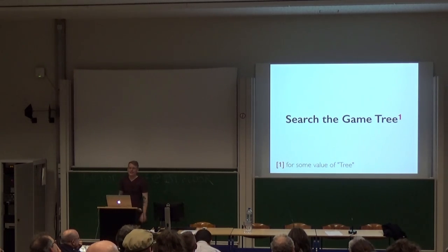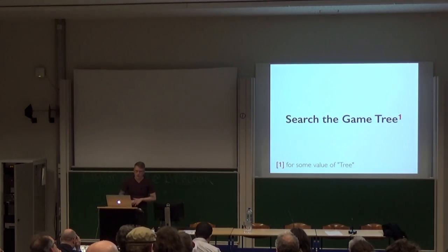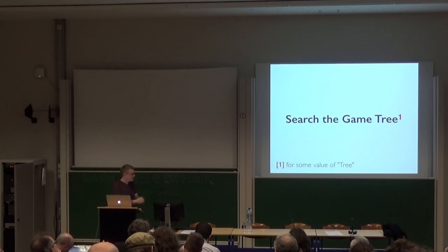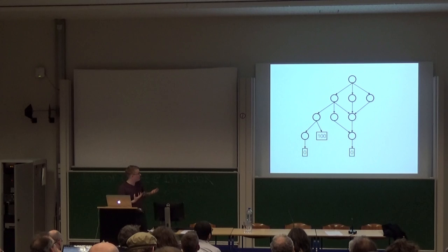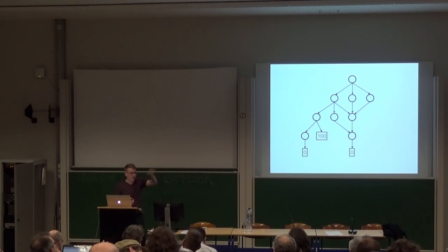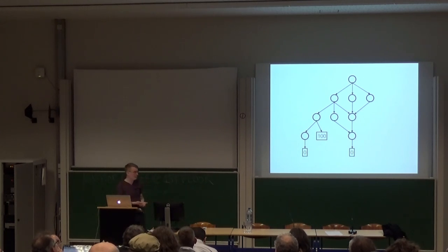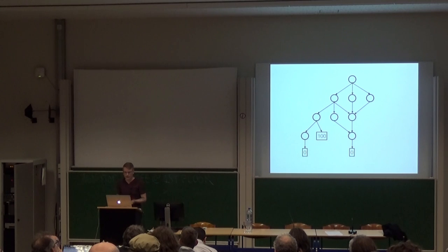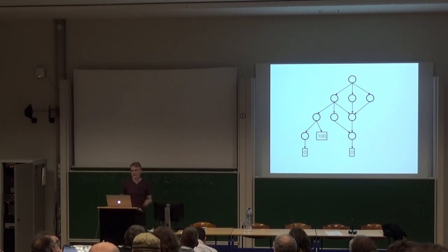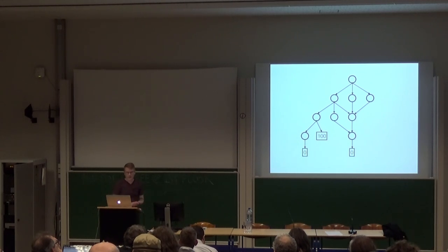So we're going to talk about searching the game tree. I say game tree because that's what everybody calls it, but really the moves are directed, so it's really a directed graph. And because we said the games have to be finite there can't be any cycles, so really it should be called a game DAG — a directed acyclic graph — but nobody calls it that, so I'm just going to call it a game tree.